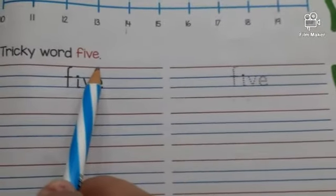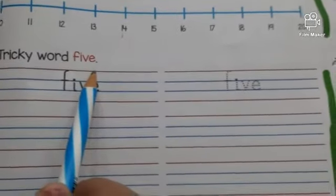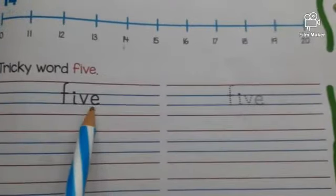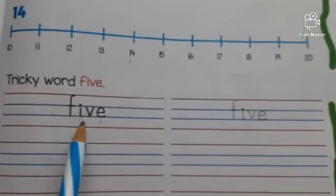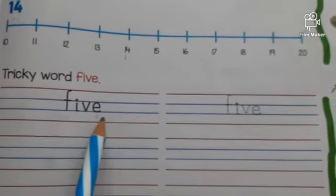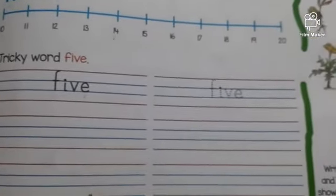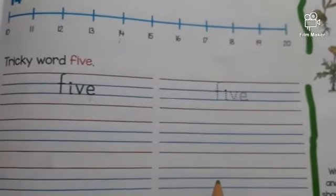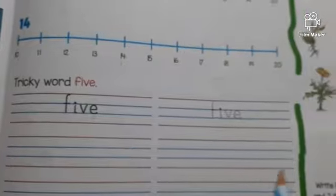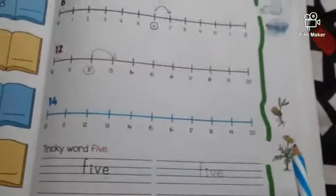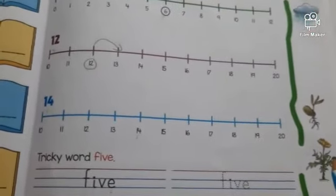How will you read 5 spelling? F-I-V-E 5. F-I-V-E 5. Now, write 5 spelling downside in a beautiful handwriting. And don't forget to do the side work. Do it nicely. Till then, bye-bye.